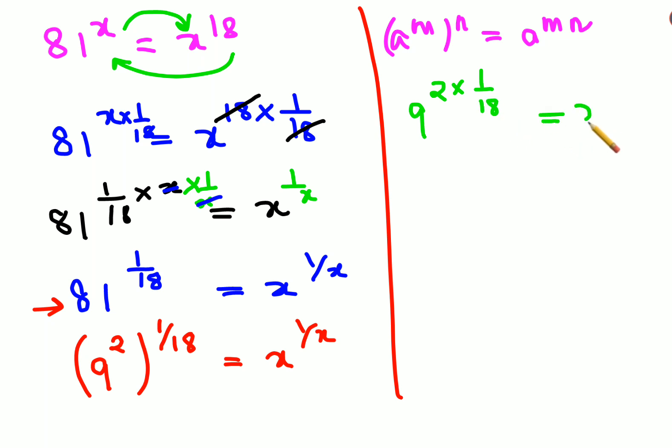So basically now your question changes to 9 raised to 2 into 1 upon 18. Here we are left with x raised to 1 upon x. And next you can see this is 1s and 9s. So now this looks like 9 raised to 1 upon 9 equals to x raised to 1 upon x. So now from here I can say therefore value of x is nothing but just 9.